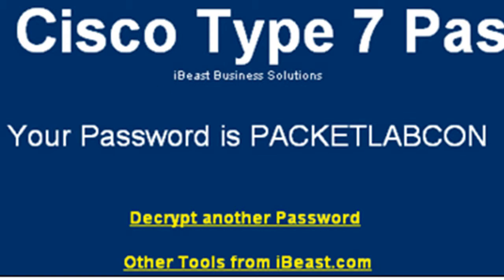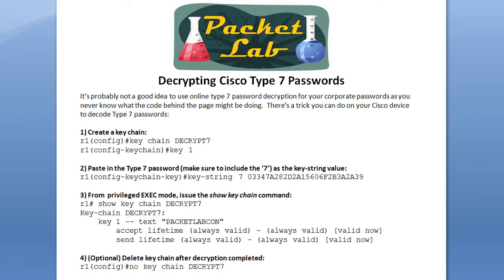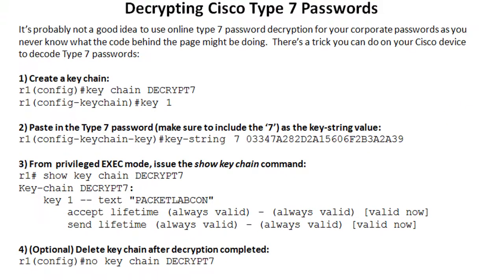The big takeaway is that while Type 7 prevents over-the-shoulder attacks, it's not strong encryption and is easily broken. However, it's probably not a good idea to take your corporate enable password and pop it into one of these online decryptors, because you don't really know what code is running in the background — it could be capturing your IP address, storing that password, and using it to attack your network later.